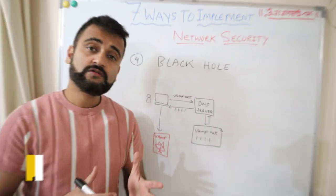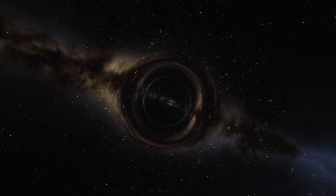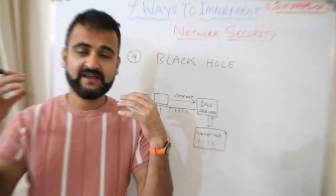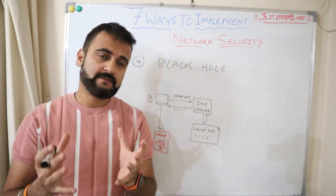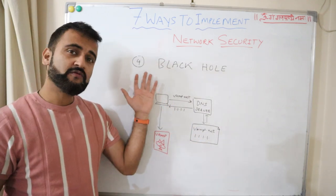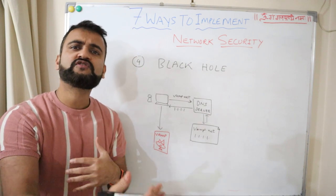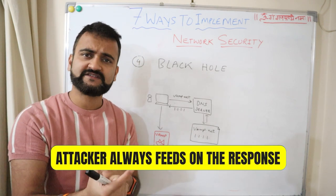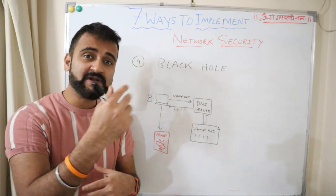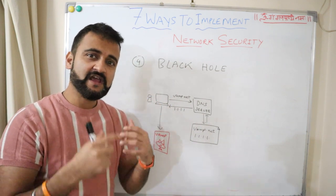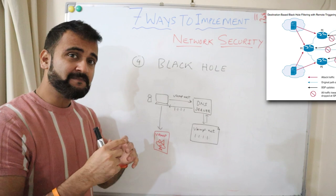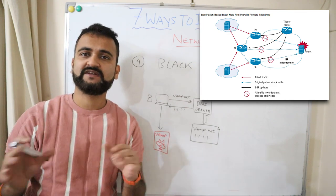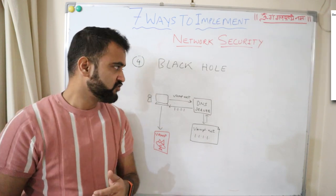The fourth method is black hole. In the universe, a black hole is a region where gravity is so strong that not even light can escape — everything gets absorbed and nothing comes out. A similar concept is applied in networks: we create an environment where no response comes back to the attacker. Attackers rely on responses from network devices or servers to confirm access and further infiltrate. In the black hole concept, traffic is routed to a random or dedicated machine where there is no activity, so the attacker gets no response.